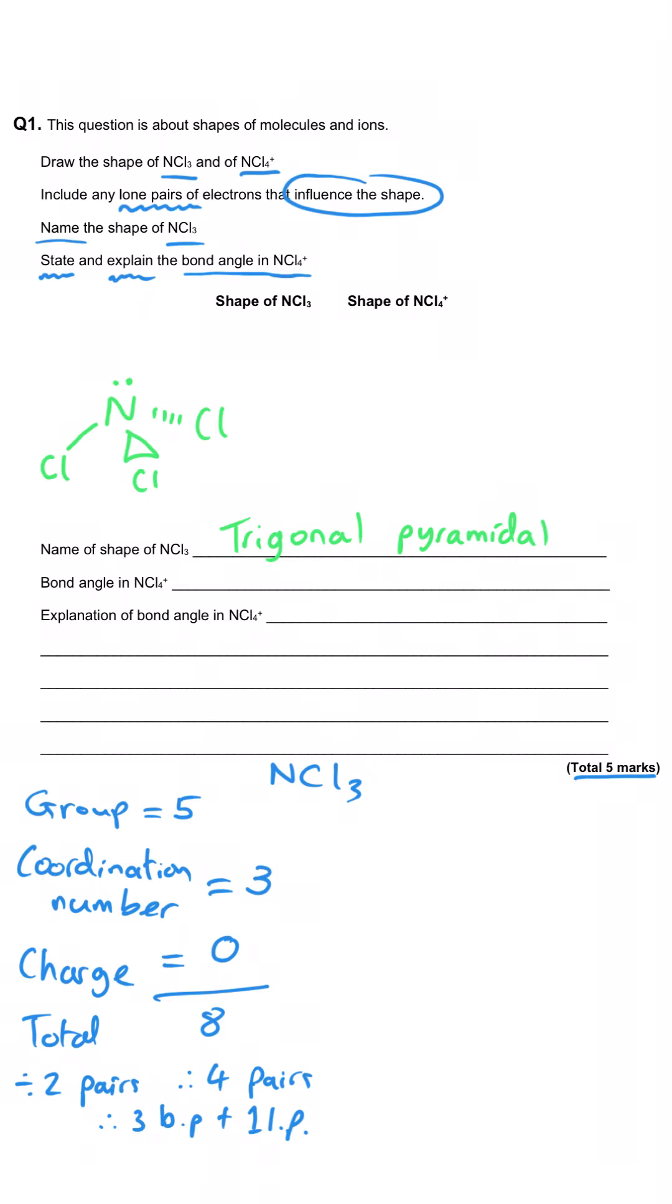If we follow that same methodology again for this time NCl4+, the group for nitrogen is of course still five. This time the coordination number is four because there are four chlorines attached. The charge is a positive charge and so therefore one electron has been lost. We add them all together first and we get eight electrons in total. Then we divide it by two and we get four pairs of electrons. And again if we track back to our coordination number of four that means there were four atoms attached. Therefore what we have got is four bonding pairs of electrons.